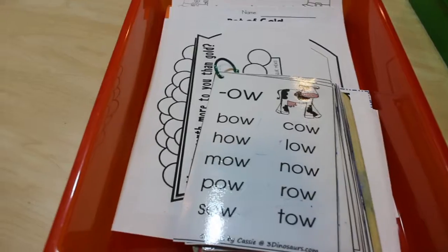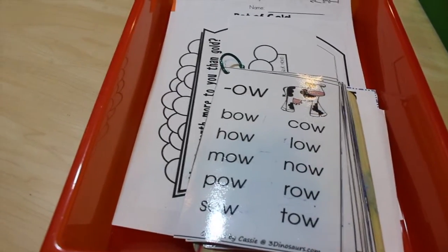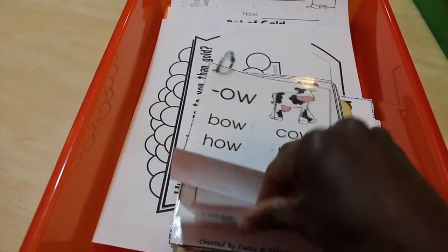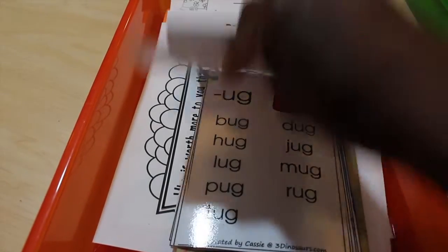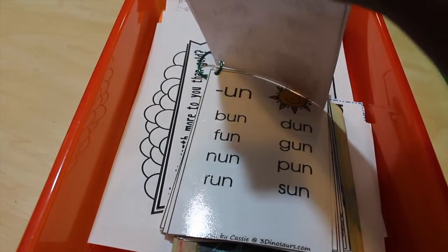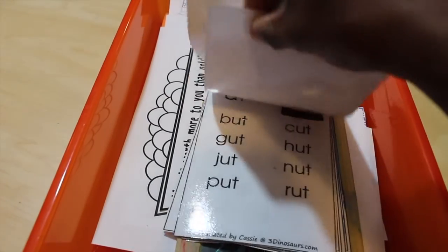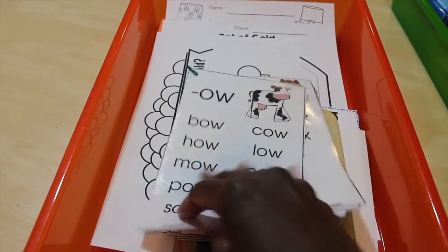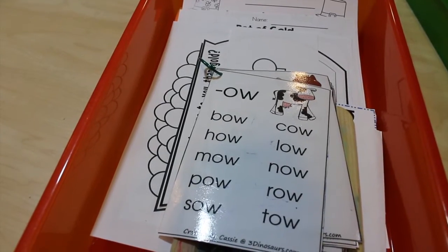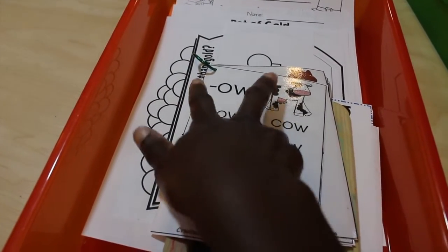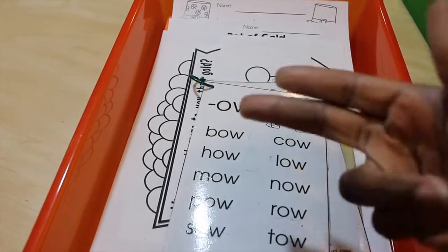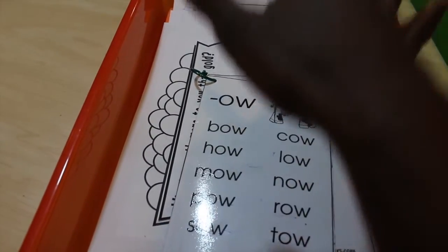For language arts, we are wrapping up on our CVC words flip book that we got from 3dinosaurs.com. We only have a couple more left. We have OW and OX and I believe OG and then we are done. I think we have 5 more pages. 5 more pages when we get back to it. And we'll probably do them all over again. It's just for us, it's about him reading it, understanding the blends of the letters and how they flow and how to read these words in their word family. So we continue to do that. He reads them off and he checks them off every day.